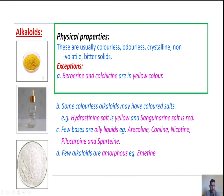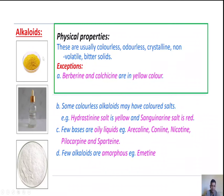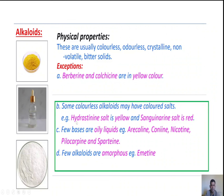Next, physical properties. Alkaloids are usually colorless, odorless, crystalline, non-volatile bitter solids. Exceptions are berberine and colchicine, which are yellow in color. Some colorless alkaloids may have colored salts — for example, hydrastinine is colorless but its salt is yellow, and sanguinarine is colorless but its salt is red in color.